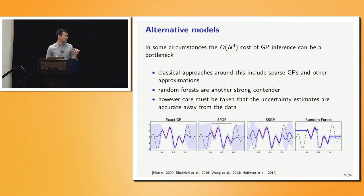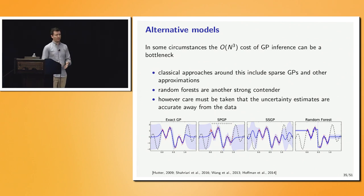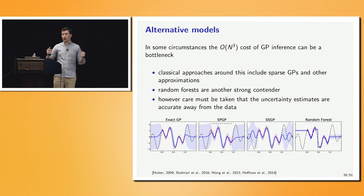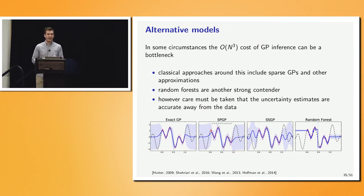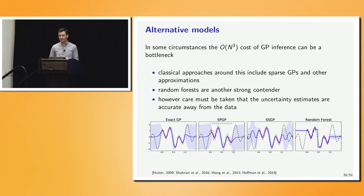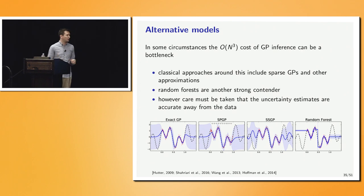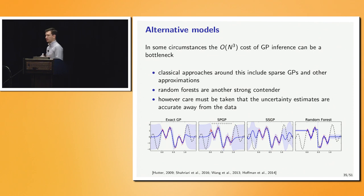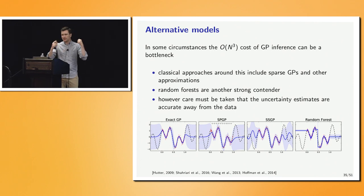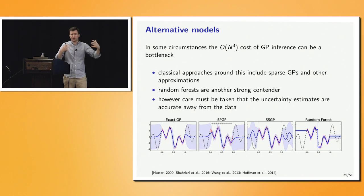In the case of high-dimensional data, you may need to run long trajectories — long sequences of queries through the model. Even with moderate dimensions, if the data is very noisy and optimization runs for many steps, the cost of matrix inversion in a Gaussian process will start to hurt. Classical approaches include sparse Gaussian processes and other such approximations.